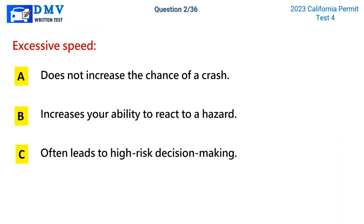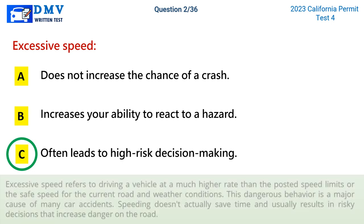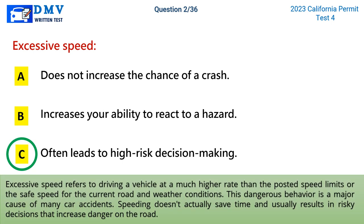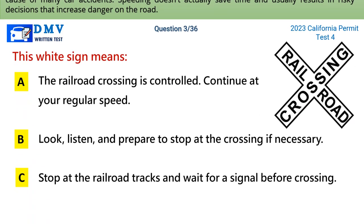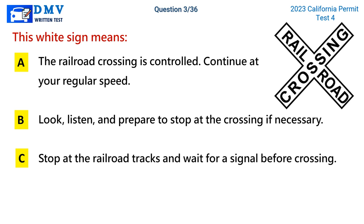Question 2: Excessive speed. A) does not increase the chance of a crash, B) increases your ability to react to a hazard, C) often leads to high-risk decision making. The correct answer is C. Excessive speed refers to driving at a much higher rate than the posted speed limits or the safe speed for current road and weather conditions. Speeding doesn't actually save time and usually results in risky decisions that increase danger on the road.